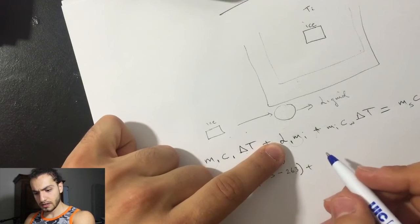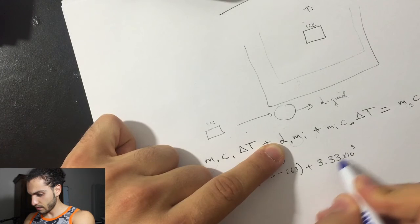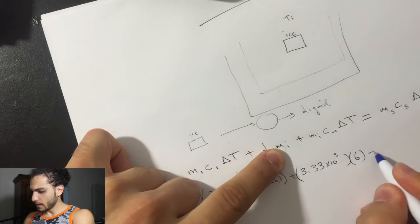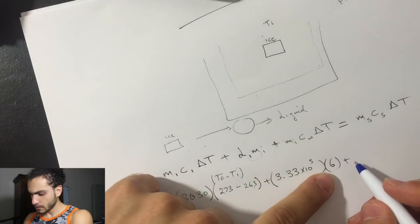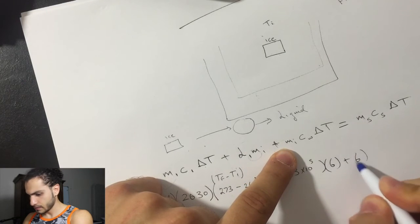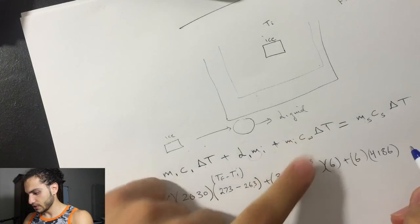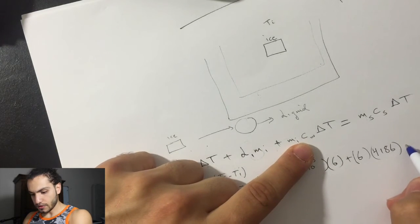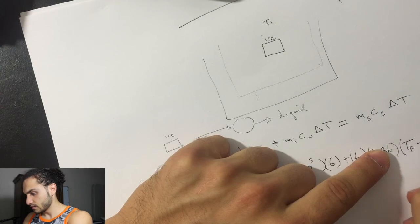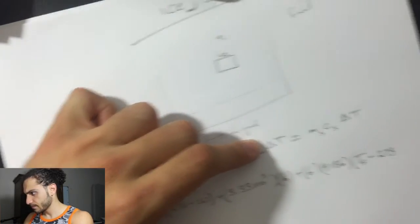The latent heat of the ice, which is 3.33 times 10 to the power of 5. And this is times 6, which is the mass of the ice. I'm going to add to it, plus mass of the ice, times specific heat of the water, 4186. Because now here it's water, it changed from ice to water in here. Times the change in temperature. So, T final, the one we're looking for, minus 273.